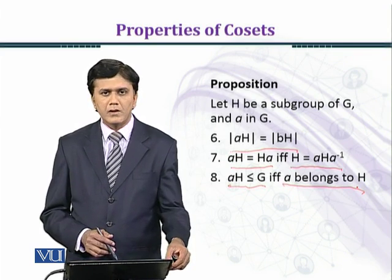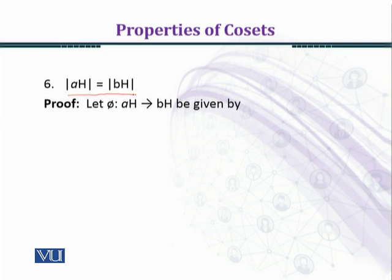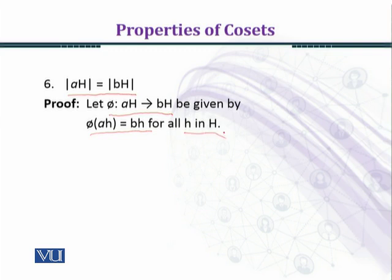Now we prove these properties one by one. We prove that the cardinality of AH equals the cardinality of BH. To prove this, we consider a function phi from AH to BH defined by phi(Ah) equals Bh for every h belonging to H. Here Ah is the element of the domain AH and Bh is an element of the co-domain BH. Every element of AH maps to BH. If we prove this map is bijective, then their cardinalities would be equal.